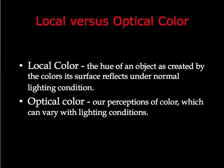We also have local and optical color. Optical color is what we perceive the color of something to be, and this can change based on the lighting situation — in the dark we might perceive something as dark gray, but in bright light we can see that color is actually navy blue. It's not that the color changes, but our perception of it changes. Local color is the hue of an object created by the colors its surface reflects under normal lighting conditions. If you have a very shiny object, it may reflect other colors in the room and appear to be a color when it is, in fact, just very glossy.